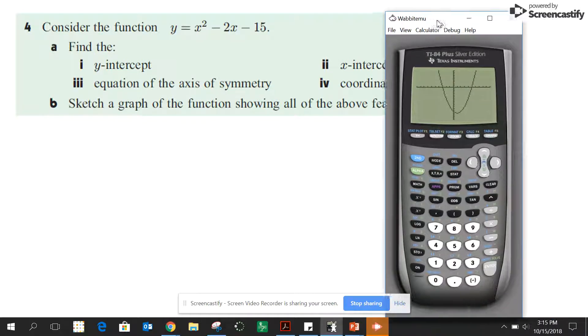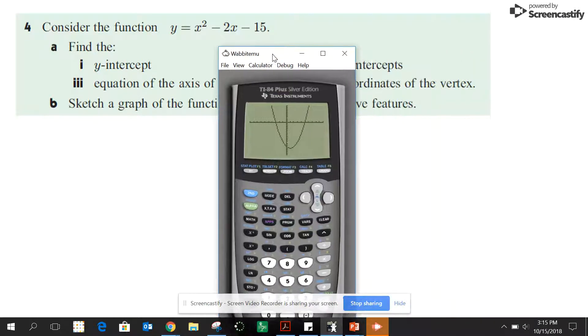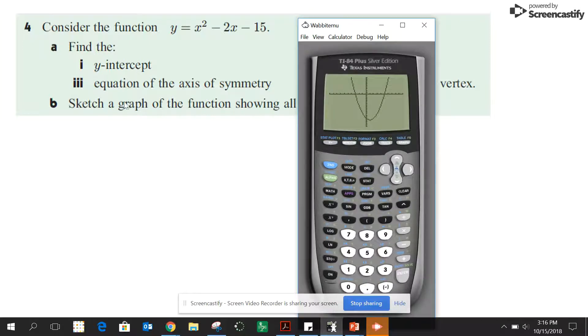Let's go through the question. It says find the y-intercept. The y-intercept is when x is zero. You can plug in zero up here. The y-intercept would be negative 15. Find the equation of the axis of symmetry. For algebra, you can use negative b over 2a.